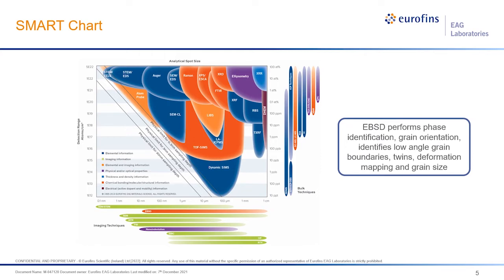Here is the SmartChart — what we call a compendium for spectroscopy and microscopy analytical resolution tools. It is plotted to show each technique with attributes related to spot size and detection limit, color-coded according to the legend in the lower left. The dark blue ones provide elemental information; green shows imaging information. EBSD is located at the bottom, and I've marked it in orange to show it also provides structural information for phase identification and crystal structure analysis.